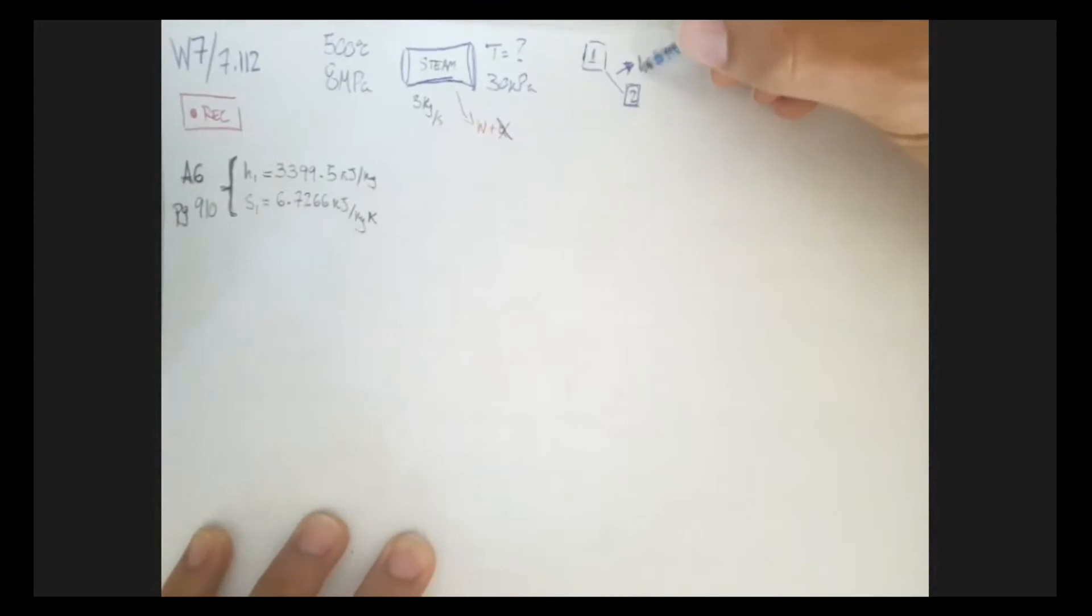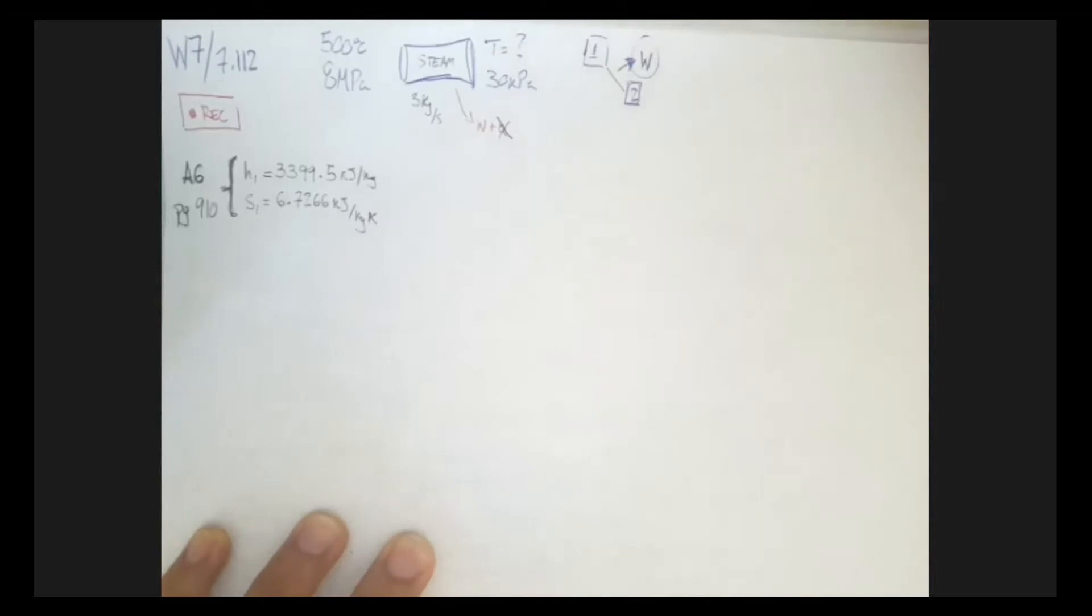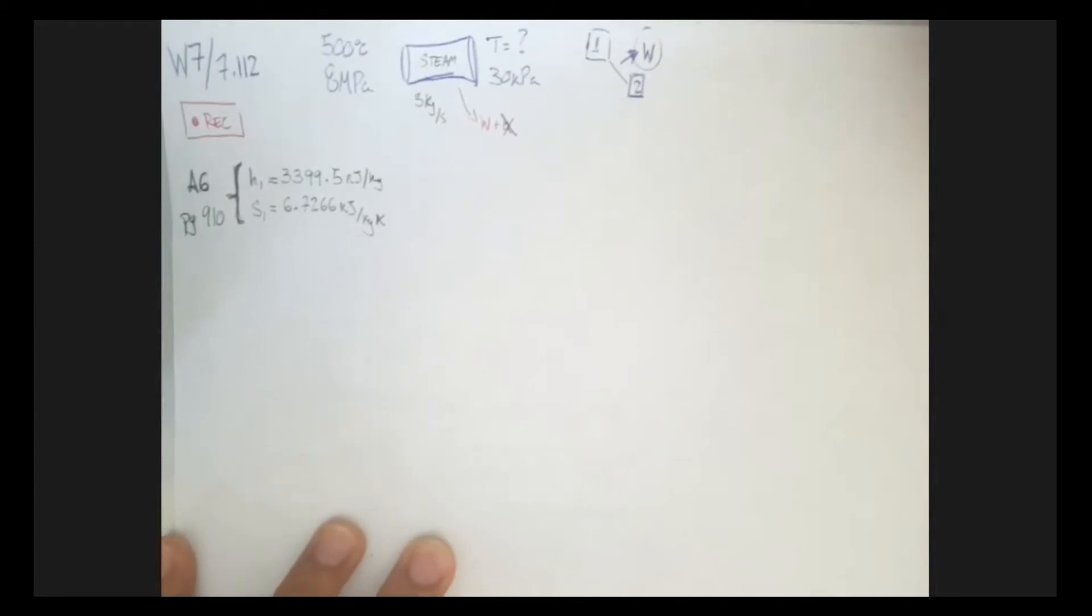So it's going to be work and heat, but there's no heat because it's adiabatic. So all the change in energy is equal to the work. So we can relate everything with enthalpy. That's the first thing we need to do. As we go on, I'm going to skip these steps because you guys already know how to do this, but be sure to do this.